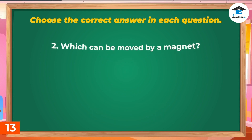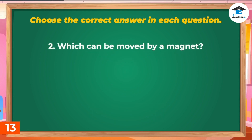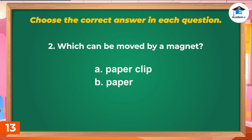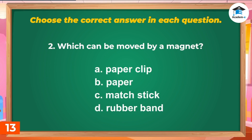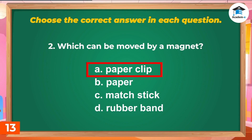Question 2: Which can be moved by a magnet? A. Paperclip, B. Paper, C. Matchstick, D. Rubber band. Answer: A. Paperclip.